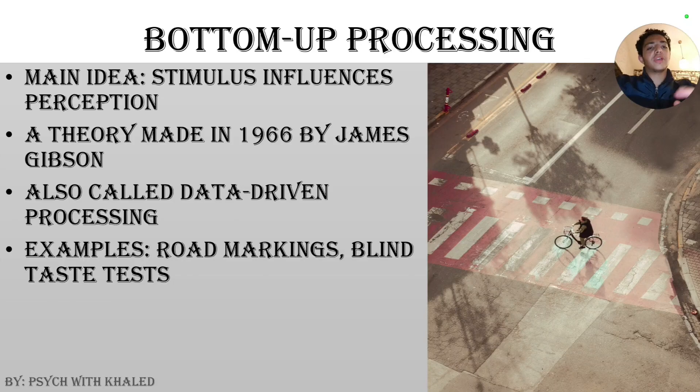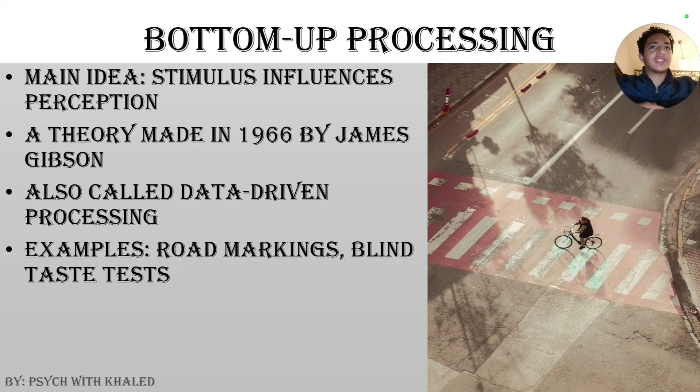Another name for bottom-up processing is data-driven processing. Examples of bottom-up processing or data-driven processing include road markings and blind taste tests. Take a look at the picture on the right. We have a cyclist on a red part of the road that's crossing the road. We can tell that the red area is exclusively for pedestrians and cyclists because of bottom-up processing — because we're seeing that there are markings across the road through the signs and through the colors on the road.